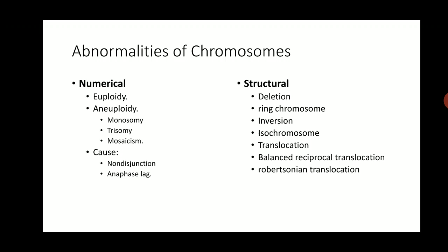Trisomy means one extra chromosome is present, so the person will have 47 chromosomes. An example of an extra sex chromosome is Klinefelter syndrome, or an extra autosome such as Down syndrome. Mosaicism is a condition where the same person has different types of cells with different chromosome numbers — one population may have 46, another 47, and another 45 chromosomes.